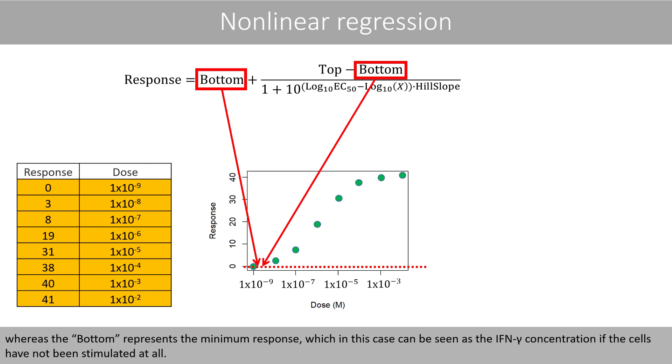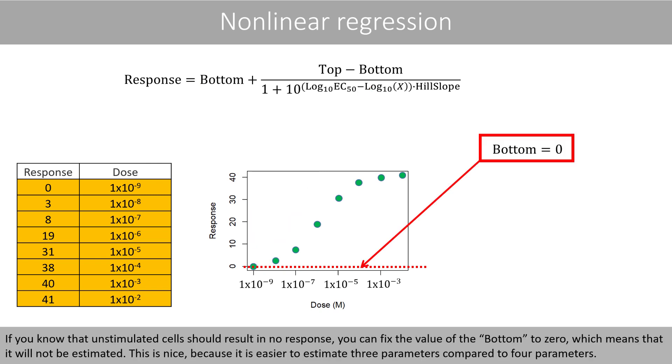The bottom represents the interferon gamma concentration if the cells have not been stimulated at all. If you know that unstimulated cells should result in no response, you can fix the value of the bottom to zero, which means that it will not be estimated. This is nice because it is easier to estimate three parameters compared to four parameters.